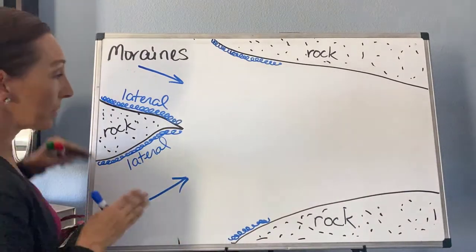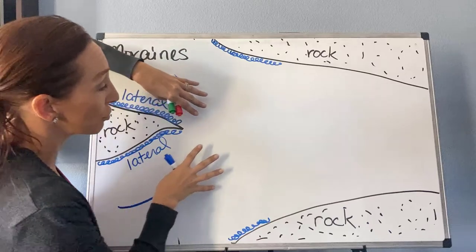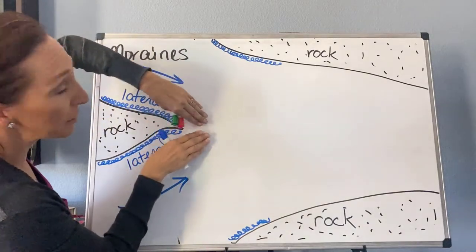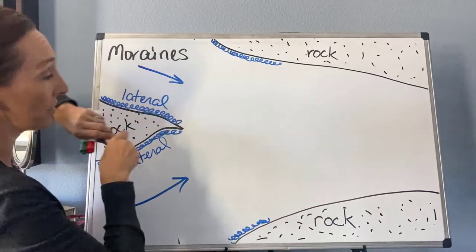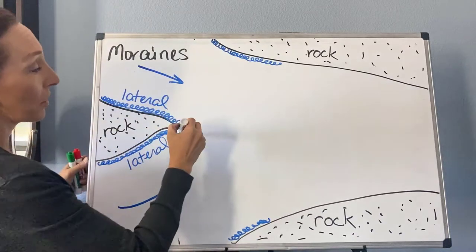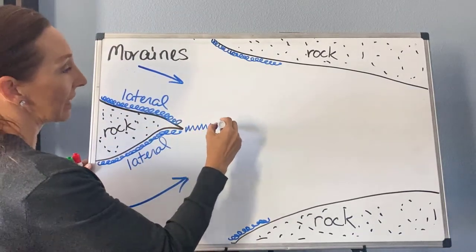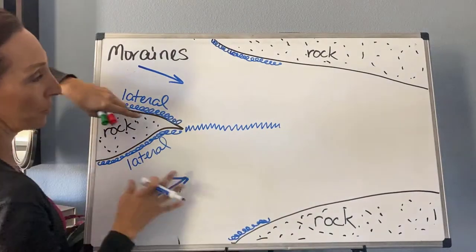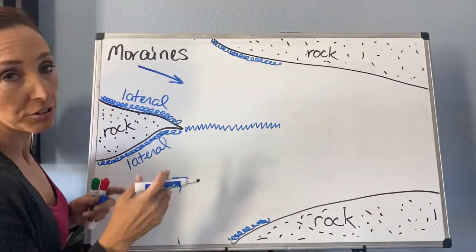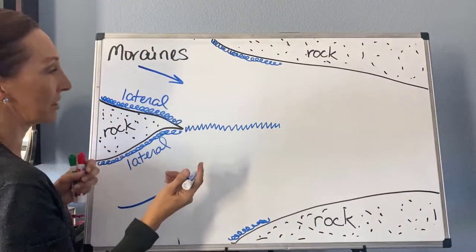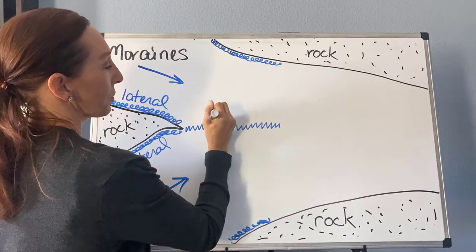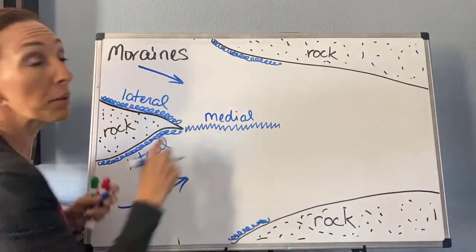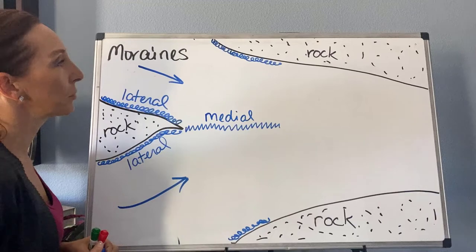Another thing that happens is when the two glaciers join, the material that comes off of this little tip here is also going to kind of get shoved up. You're going to get a moraine that marks where these two glaciers came together. This is going to be called a medial moraine — so it's in the middle. You might have heard the word medial before.